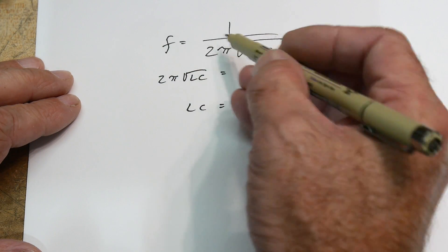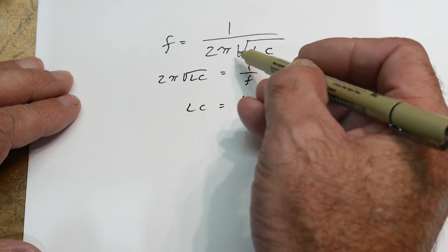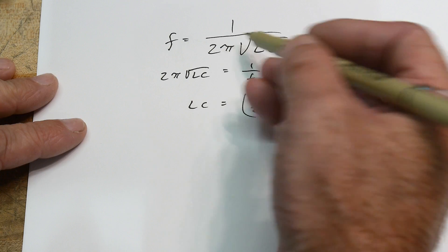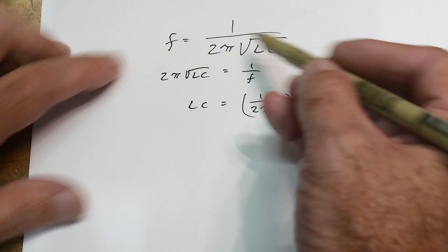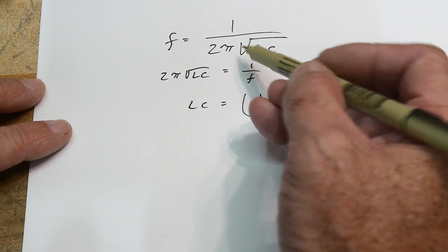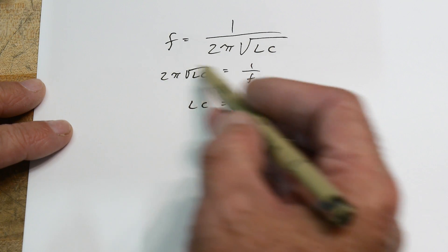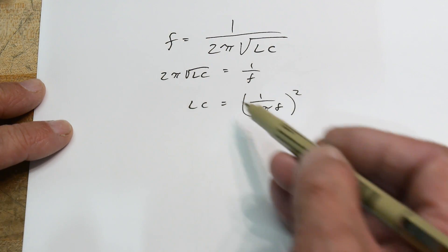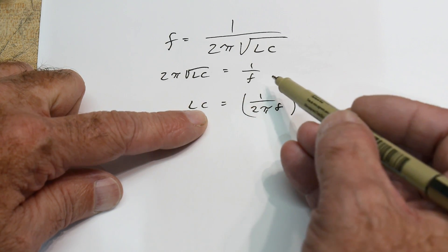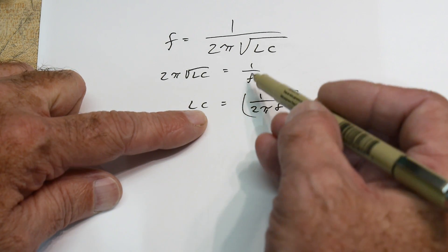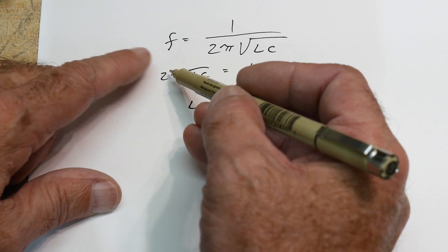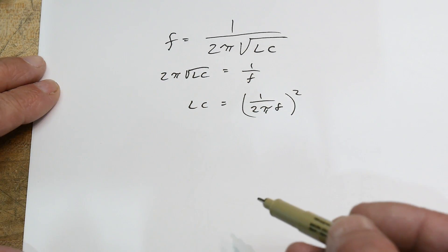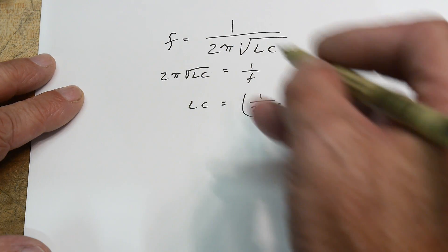All right, so frequency of a resonant circuit is 1 over 2π square root of LC. You can find that in books and stuff. So we know what F is and we know what C is, we have to solve for L. So we can move this over here and the F over there and you get this one. And then we can move the F over here and these guys over here and then square it.